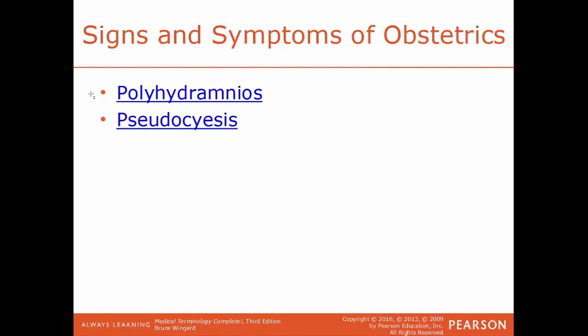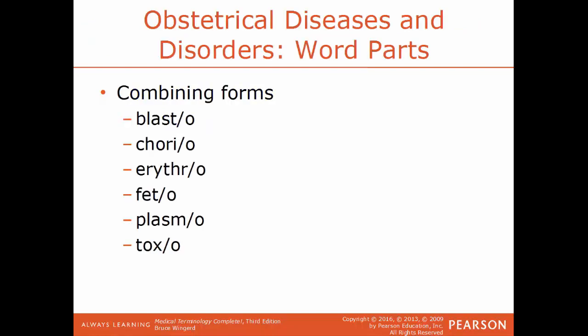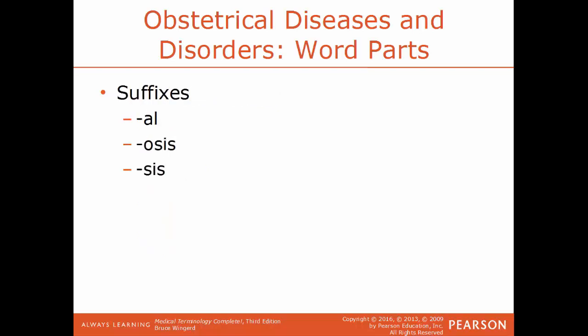Now we'll talk about some diseases and disorders from obstetrics. Combining forms: blasto is a developing cell; chorio is a reference to the chorion, the outermost layer of a developing embryo; erythro is red; feto is a fetus; plasmo is development or formation; toxo is a reference to poison. Suffixes: al is pertaining to; osis is an abnormal condition; cis is a state of or condition.